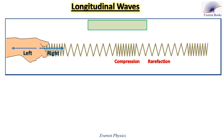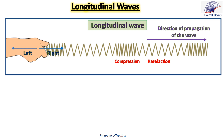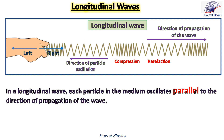This figure represents a snapshot of a longitudinal wave traveling along a slinky spring. The hand is the source of vibration. Compression and rarefaction regions are created in the spring. The wave travels to the right, and each particle in the slinky spring moves to the right and to the left. In a longitudinal wave, each particle in the medium oscillates parallel to the direction of propagation of the wave.